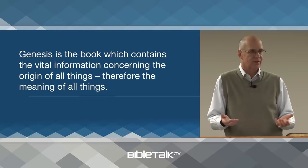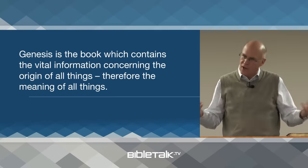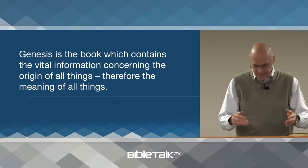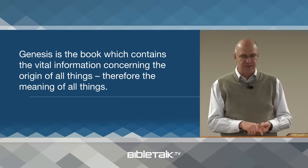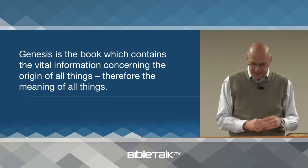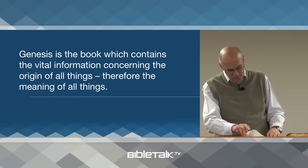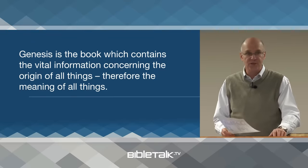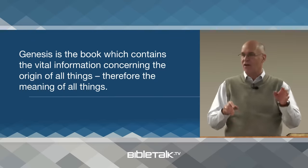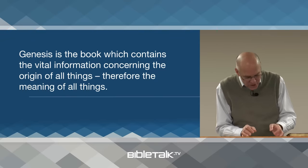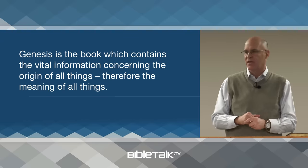In the Old Testament, no other book is more fundamental to understanding not only the Old Testament but the New Testament and human history than Genesis. Genesis is the book which contains the vital information concerning the origin of all things, and therefore the meaning of all things. These things would not be accessible to us if God had not revealed and preserved them in Genesis. The word Genesis actually means 'origins.' And so it describes 14 origins that cover the beginning of time to the formation of a people to carry out God's plan of salvation.